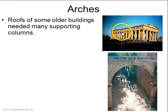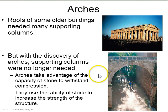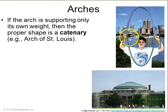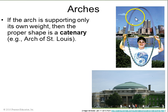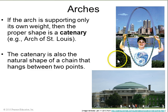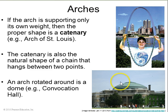Roofs of older buildings needed many supporting columns, but when arches were discovered, supporting columns were no longer needed. All the blocks in an arch take advantage of the fact that stone is very strong under compression. If an arch is supported only by its own weight and completely in compression mode, it forms the shape called a catenary. An upside-down catenary is exactly the shape a hanging chain would have. The St. Louis arch is supported entirely by compression, and if you rotate a catenary around in a circle, you can form a dome — the dome of Convocation Hall on campus is also supported by compression.